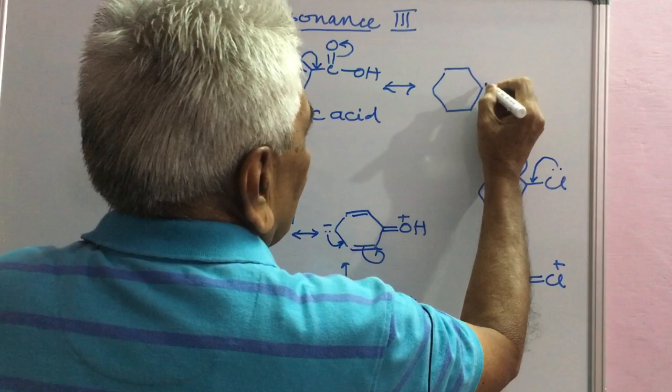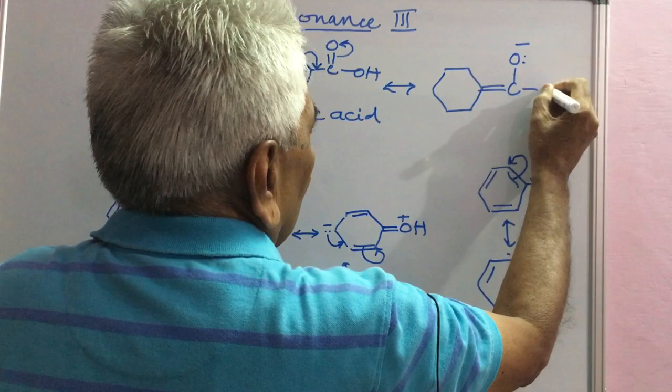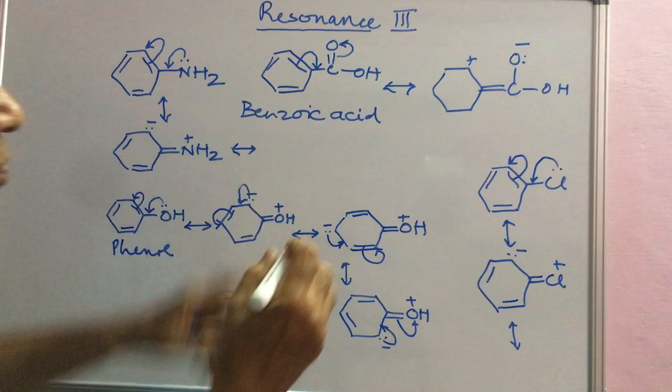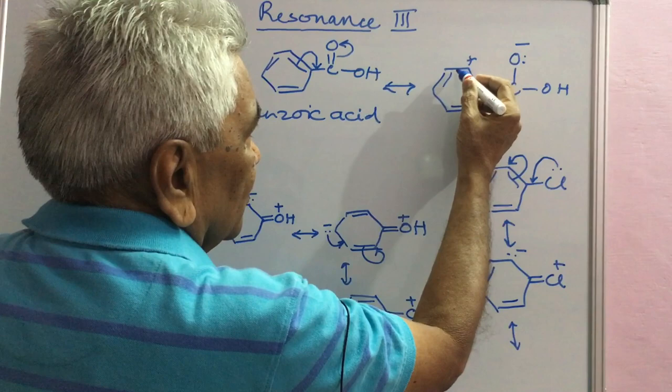Double bond. C. Electron pair. OH. A plus charge will develop here. Double bond. Double bond. Situation plus. Single. Double. One arrow only.